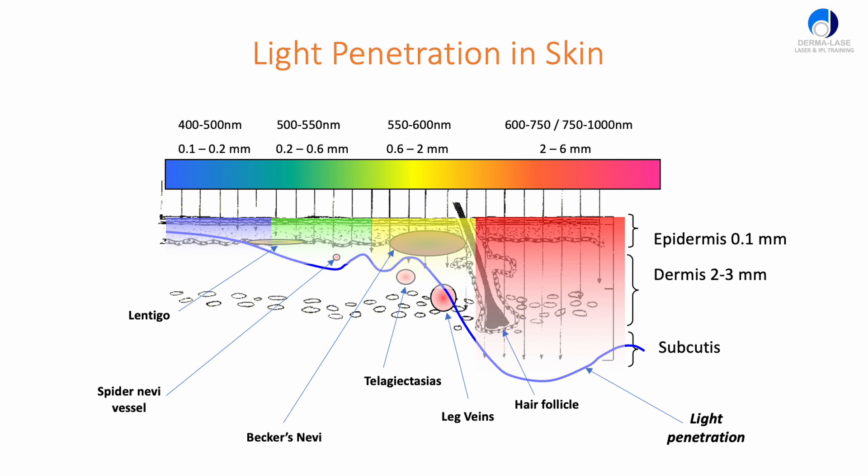I put in here some potential targets, some blood vessels and pigmentation and a hair follicle. You can see that if you were trying to treat the hair follicle using blue light, you might think that's a good idea because blue light is very strongly absorbed in melanin.